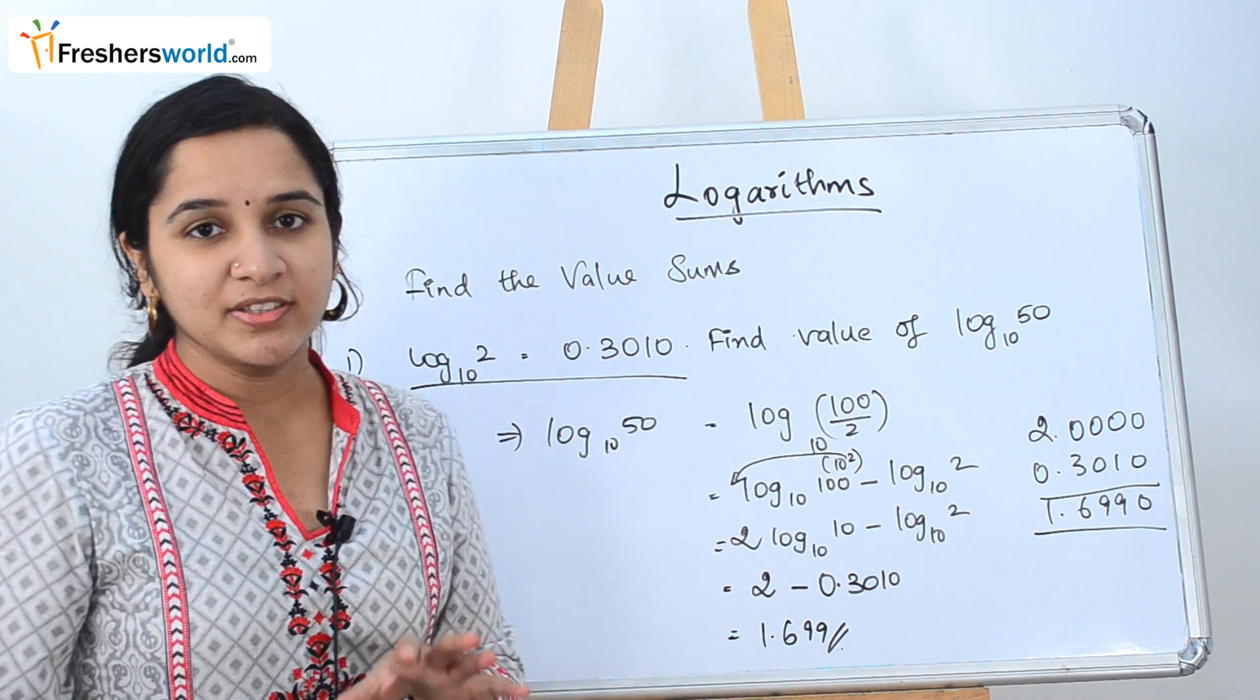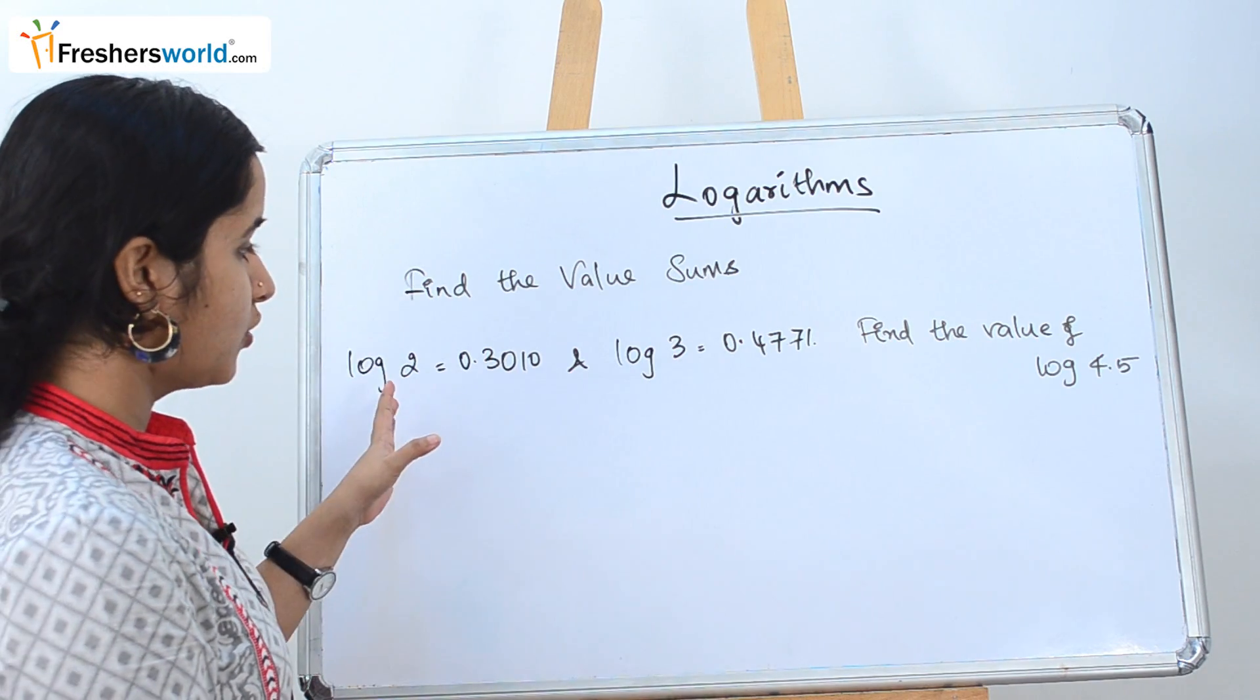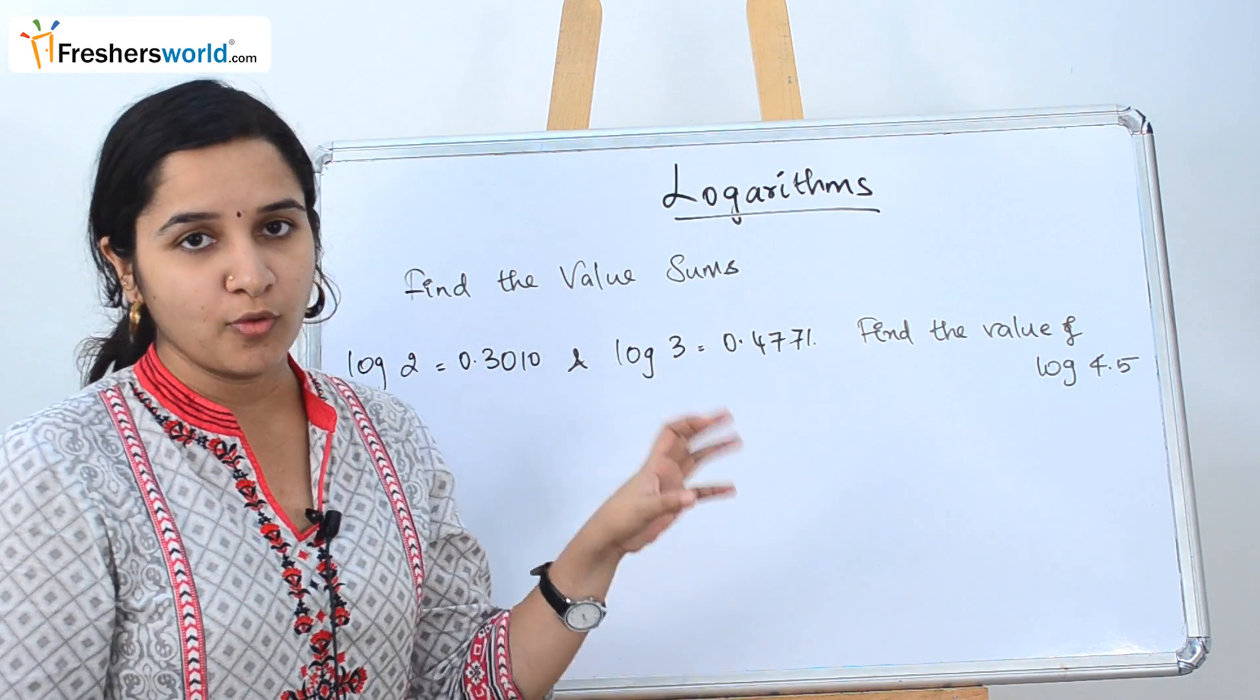So once you solve log 50, the value that you are attaining is 1.699. To understand this concept better, let's solve some more problems. The next question that they have given is they have given the value of log 2 and log 3, and they are asking you to find the value of log 4.5.